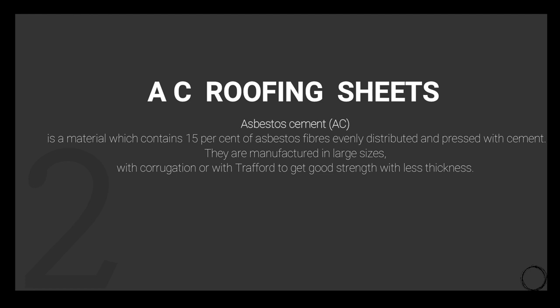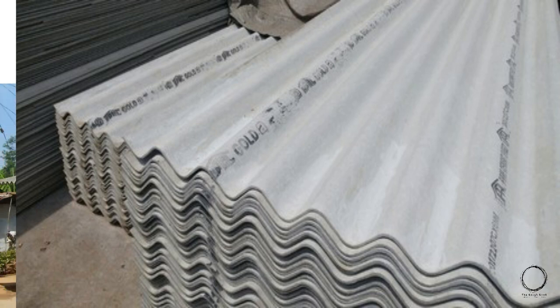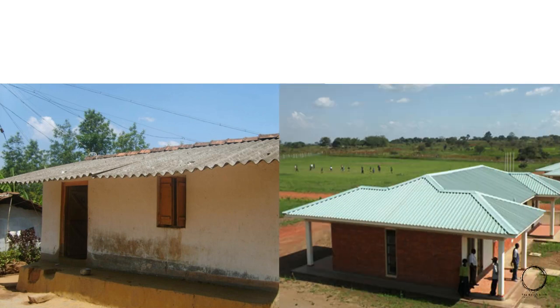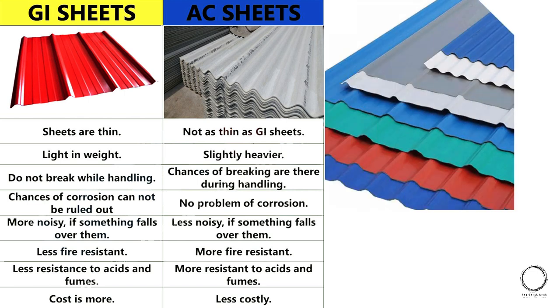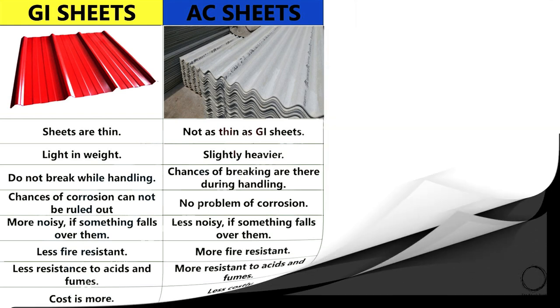The next type is AC roofing sheets — AC stands for Asbestos Cement — a material containing 15% asbestos fibers evenly distributed and pressed with cement. They are manufactured in large sizes with corrugation or taffod design for good strength with less thickness. These sheets are divided into two subdivisions: GI sheets (galvanized iron) and AC sheets, with several differences between them. Galvanized sheets are available in different kinds of designs.